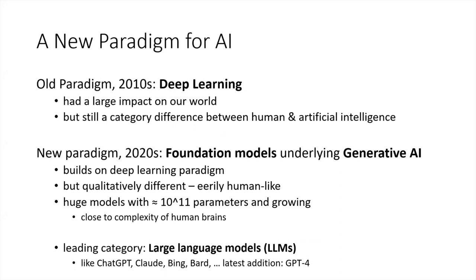The first thing I want to emphasize: almost all of you at this conference dealing with text as data are familiar with the deep learning paradigm. It had a significant impact on our world, but within the deep learning paradigm of the 2010s, there was always a category difference between what humans and AI can do. Now in the 2020s, we are in a new paradigm — the paradigm of foundation models — the large deep learning models underlying what people now call generative AI. It builds on deep learning but is also qualitatively different.